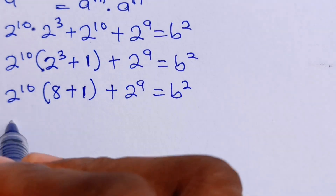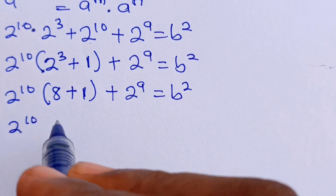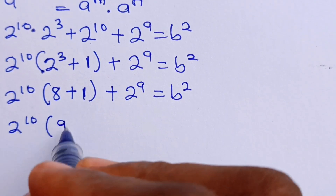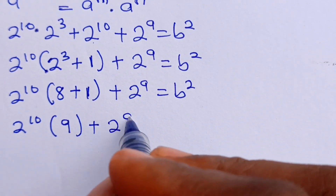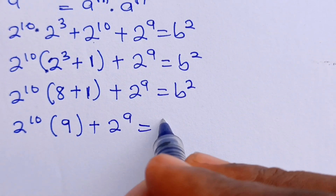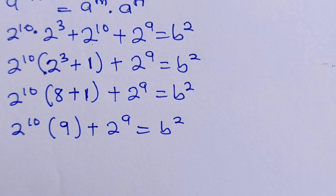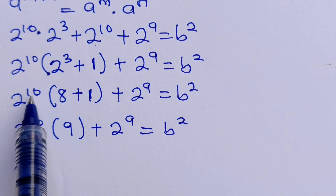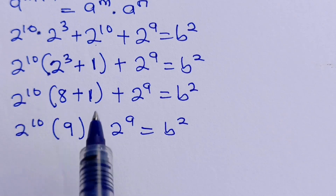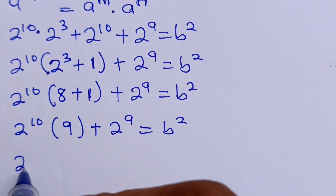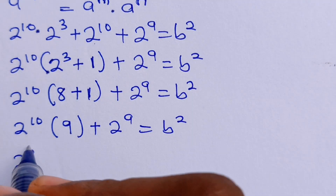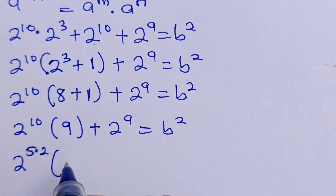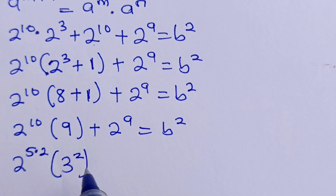Now let's continue to solve. We have 2 to the power of 10 in brackets. 8 plus 1 is 9, plus 2 to the power of A is equal to B squared. At this point, let us express 10 as 5 multiplied by 2. So we can write this as 2 to the power of 5 multiplied by 2, bracket 9, which is 3 squared.